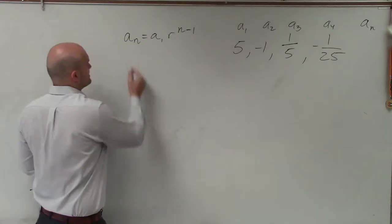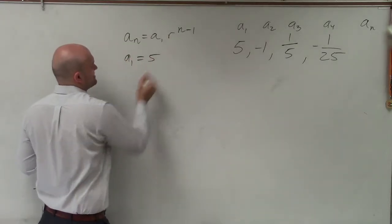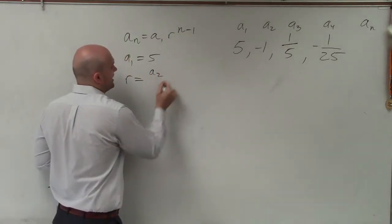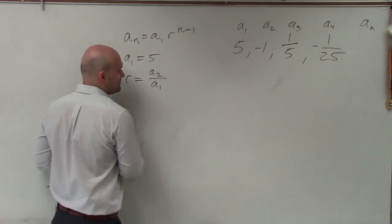So we know a sub 1 is going to equal 5. That's basic. r is going to represent the ratio. And to find the ratio, we can simply just take any term and divide it by its previous term.